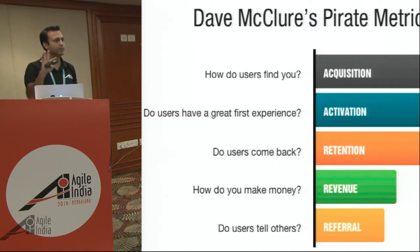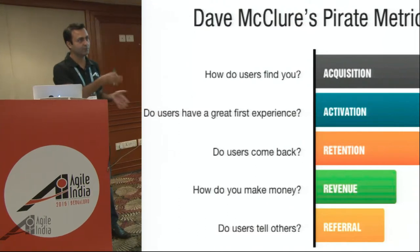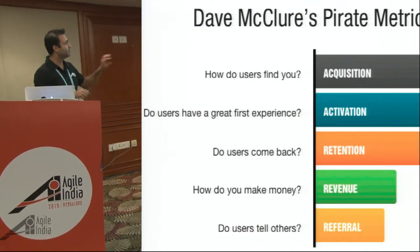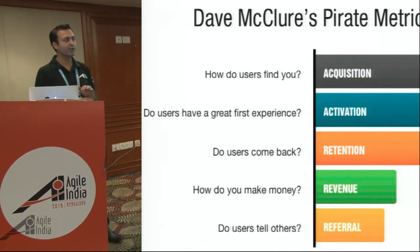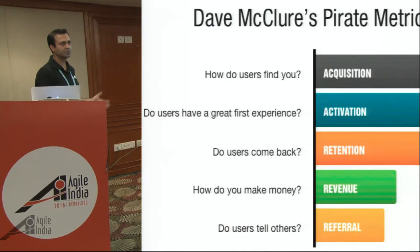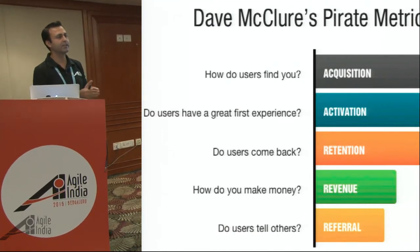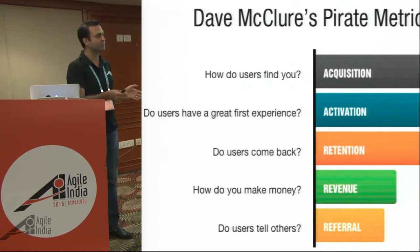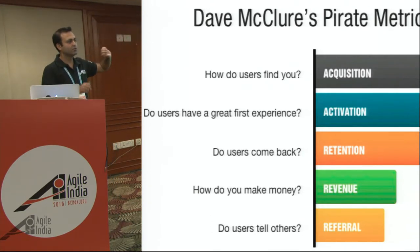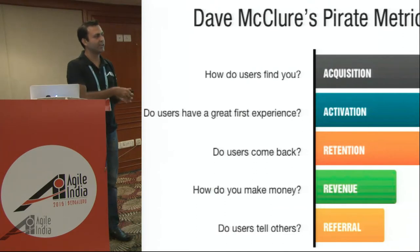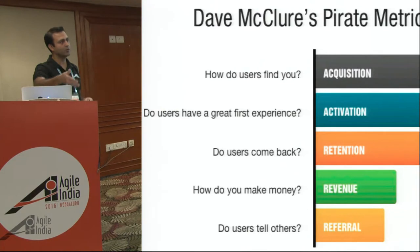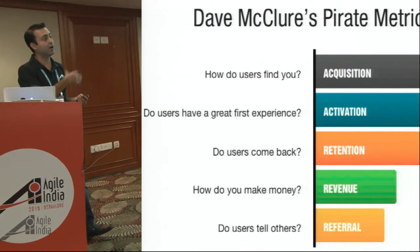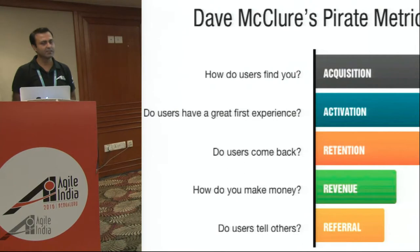Dave McClure's framework buckets everything into five blocks, and in our product we've done our roadmap based on these blocks. The first thing is acquisition: you have a product, now you figure out how to acquire users. That could range from how do you acquire to how many are you acquiring. You can figure out a bunch of KPIs: what channels are working, unique page views, number of users on a week-on-week basis, number of downloads if you're in an app business. All this is your acquisition.